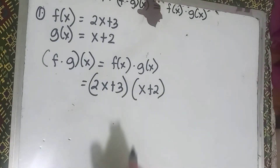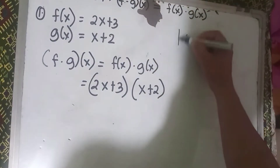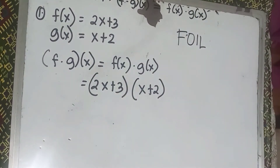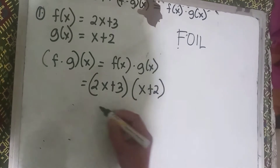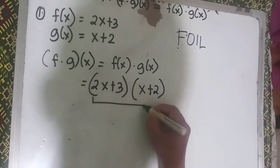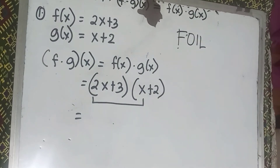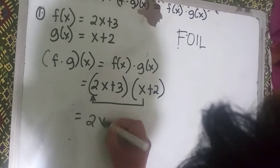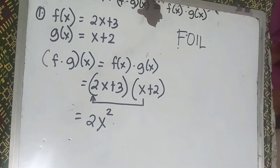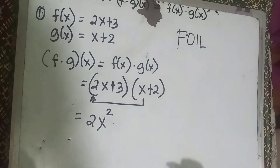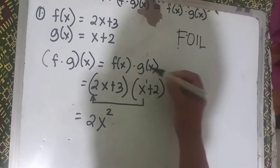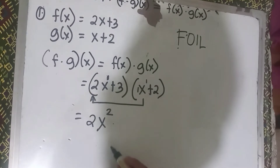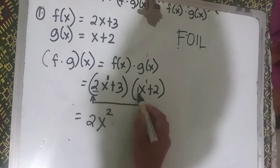To find the product, we follow the FOIL method. FOIL stands for First, Outer, Inner, Last. The First terms are 2x times x. When you multiply, you add the exponents — x has exponent 1 and 2x has exponent 1 — so 2 times 1 gives coefficient 2, and 1 plus 1 gives exponent 2, resulting in 2x squared.